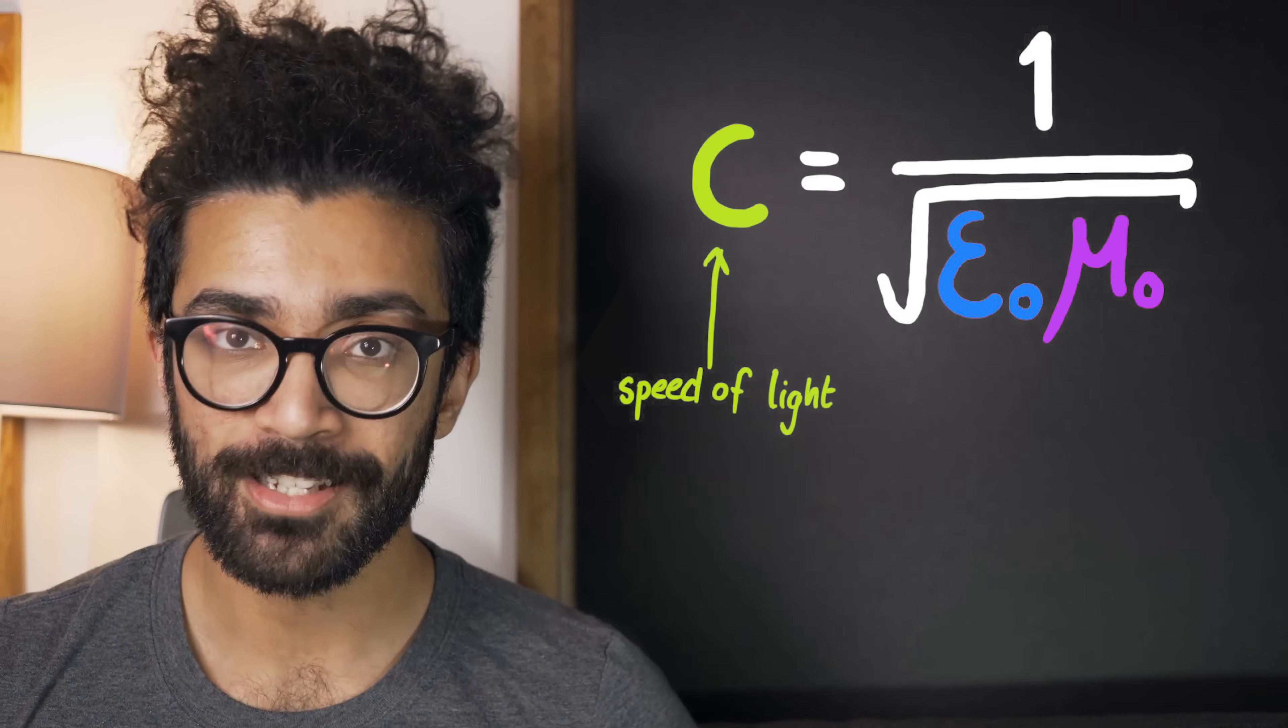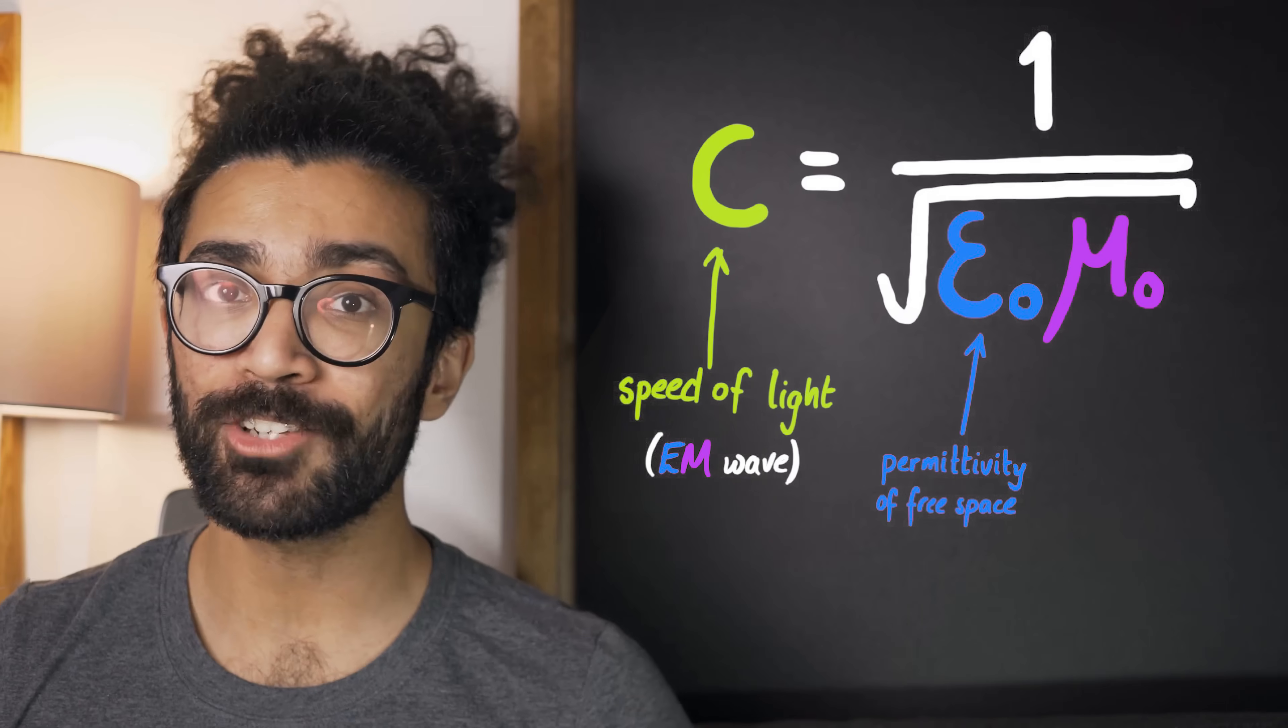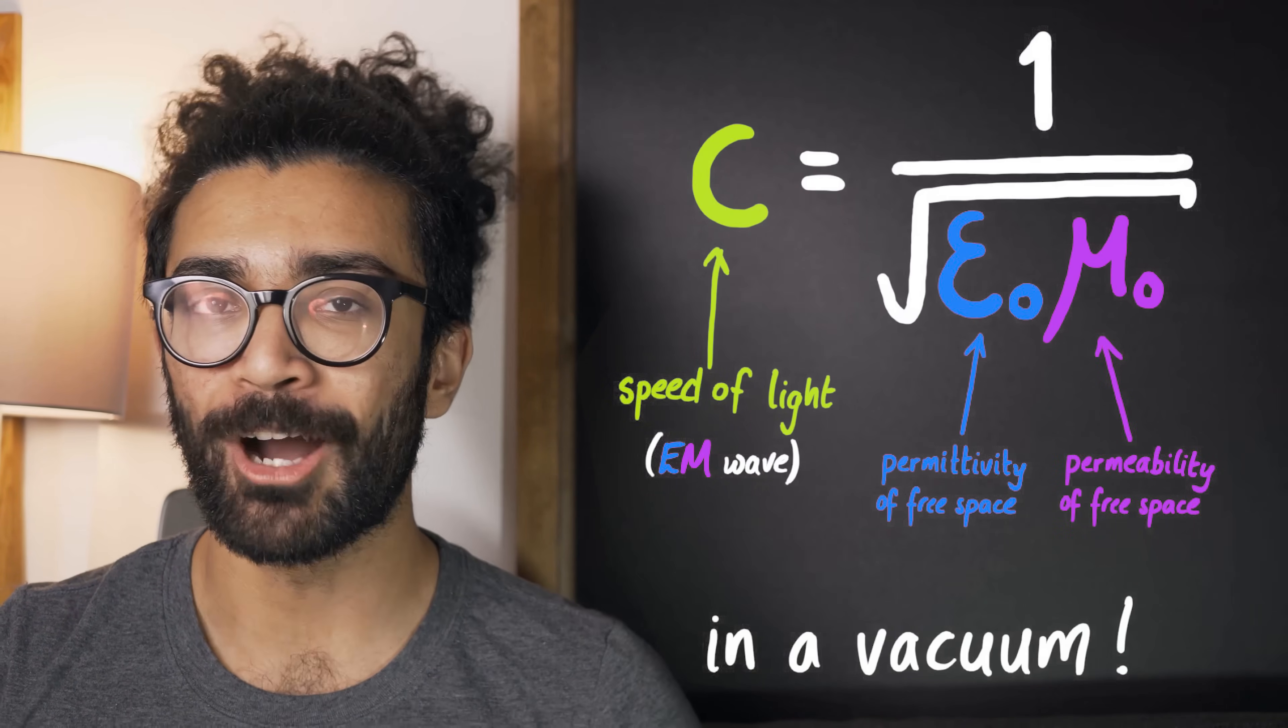And so the speed of light, an electromagnetic wave, has something to do with the ability of electric and magnetic fields to permeate through empty space, through a vacuum. How appropriate, right?